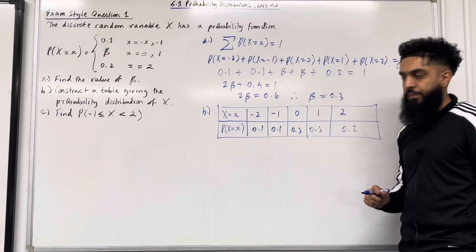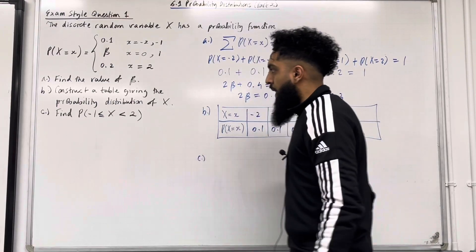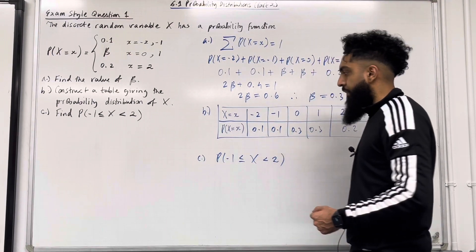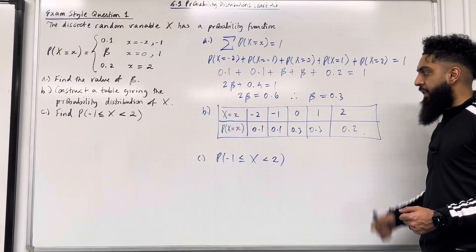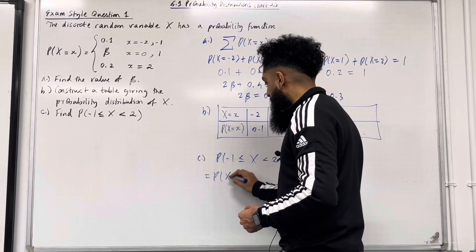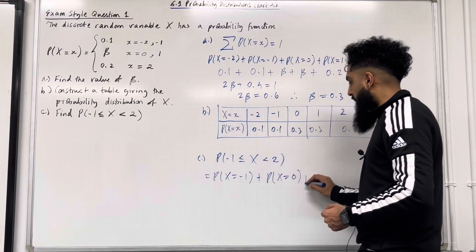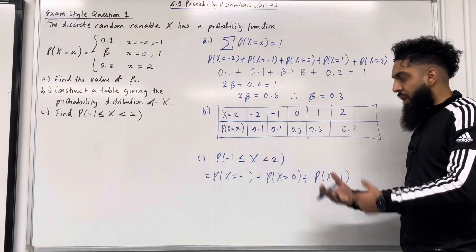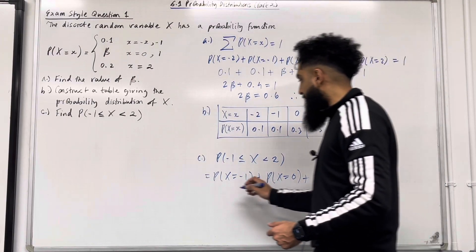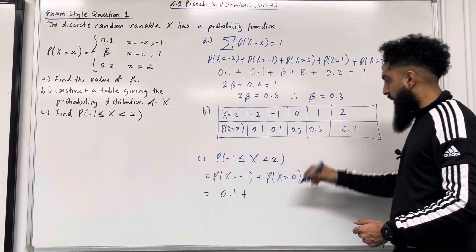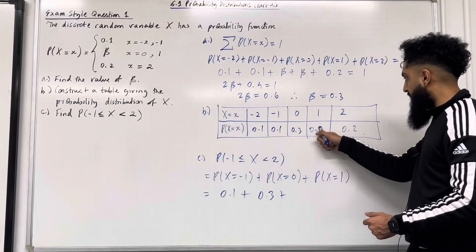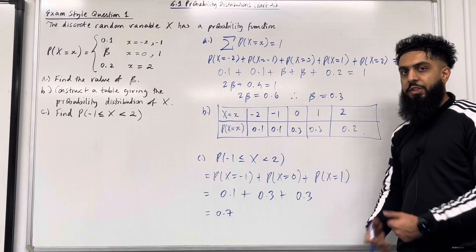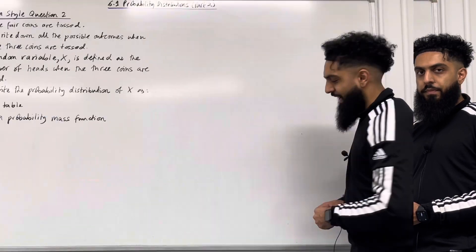That completes part B. In part C we want to work out P(-1 ≤ X < 2). We are adding three probabilities: P(X = -1) + P(X = 0) + P(X = 1). From the table that is 0.1 + 0.3 + 0.3, which gives us 0.7. That completes part C and exam style question 1.